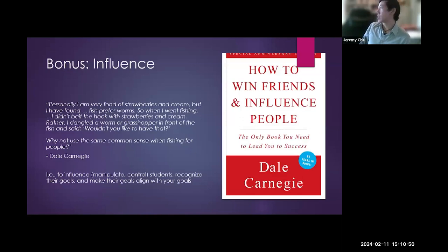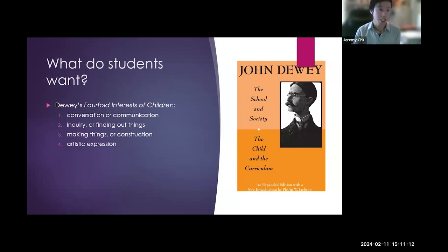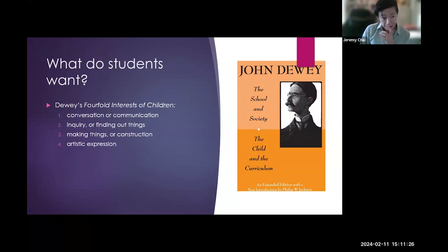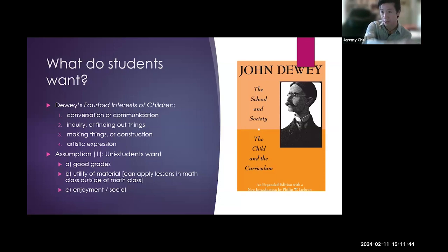I did some research about what students want — it depended on year, major, and type of school. I'll borrow John Dewey's ideas about children: the fourfold interests are conversation and communication, inquiry or discovery, making things through construction, and artistic expression. For university students, I hypothesize they want good grades, utility — meaning things they learn can be applied outside class — and the social and enjoyment aspect. Think about what students want, and that's how you'll influence them.